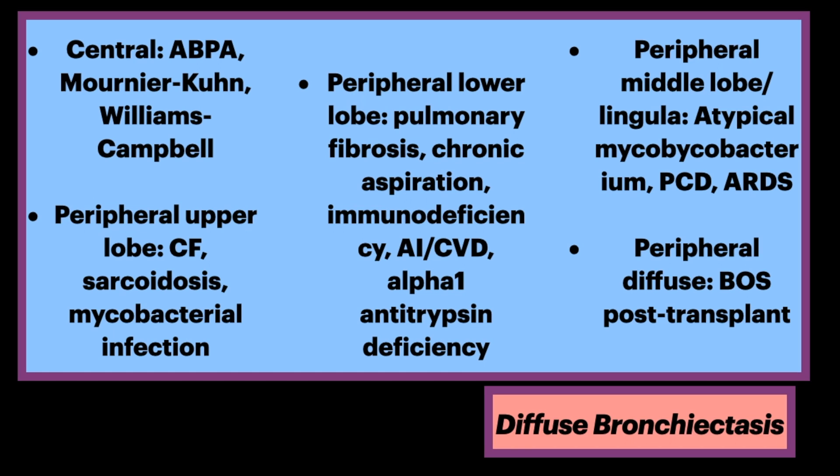For peripheral upper lobe predominant diffuse bronchiectasis, think of CF (cystic fibrosis), sarcoidosis, and TB.